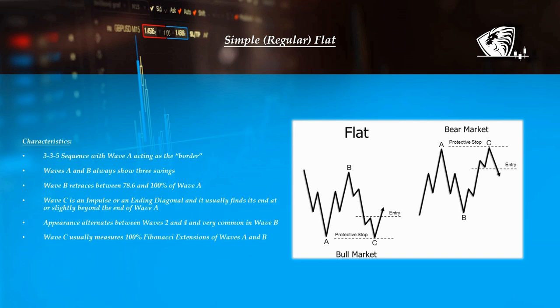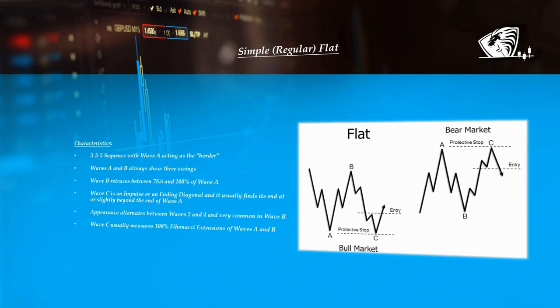Simple or regular flat characteristics: 3-3-5 sequence with wave A acting as the border. Wave A and wave B always show free swings. Wave B retraces between 78.6 and 100% of wave A. Wave C is an impulse or an ending diagonal and it usually finds its end at or slightly beyond the end of wave A. Appearance alternates between waves 2 and 4 and is very common in a wave B. Wave C usually measures 100% Fibonacci extensions of wave A and B.